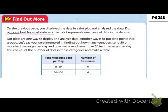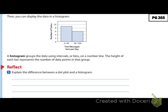Another way is to put data points into groups. If you were interested in finding out how many teenagers send 50 or more texts per day versus fewer than 50, you count the number of dots in those categories and make a table. We have 0 to 49 with 9 people, and 50 to 100 with 6 people.